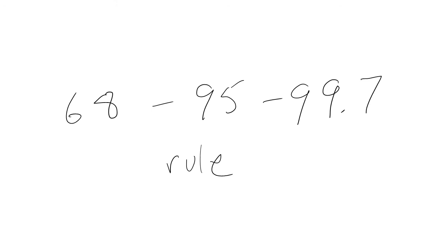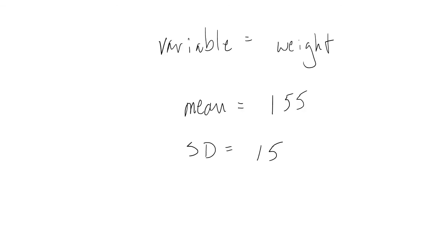These figures are helpful markers for understanding how our variable's distribution is spread out around the mean. Say, for example, our variable is weight, and weight is normally distributed in our sample. If someone told us the mean of our distribution for weight is 155 pounds, and the standard deviation is 15, we can make some estimates about the spread of the distribution.